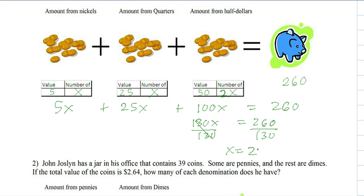X represents the number of nickels. So that means we have 2 nickels, 2 quarters, and twice as many half dollars. So 4 half dollars. And that's our answer.